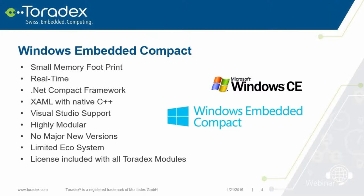Even if you have a Windows Store app, it's not straightforward to bring that to Windows Embedded Compact. It's highly modular — you can do from a few MB up to 100 MB — and you can really customize everything. There will be no new major version; it's at Windows Embedded Compact 2013 and will be supported for quite a while, but there will be no Windows Embedded Compact 2016. Toradex is still committed to supporting Windows Embedded Compact even on upcoming modules.